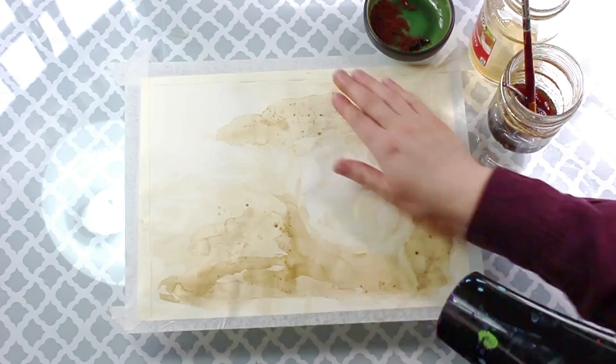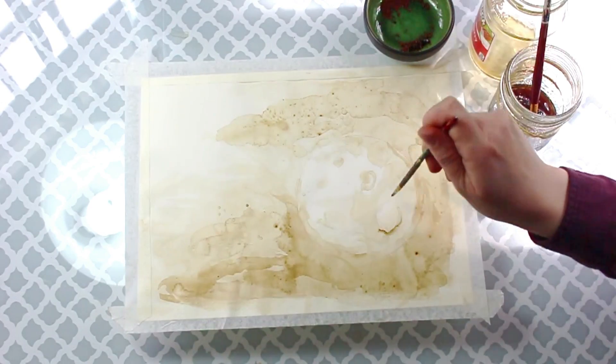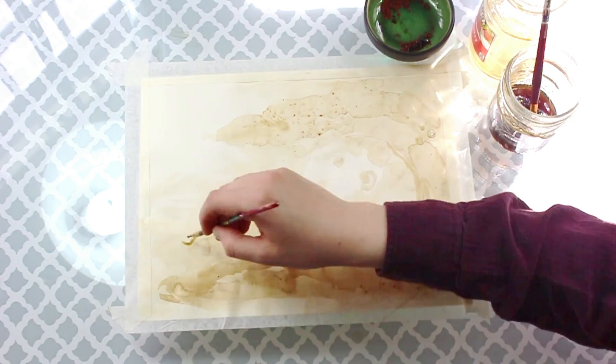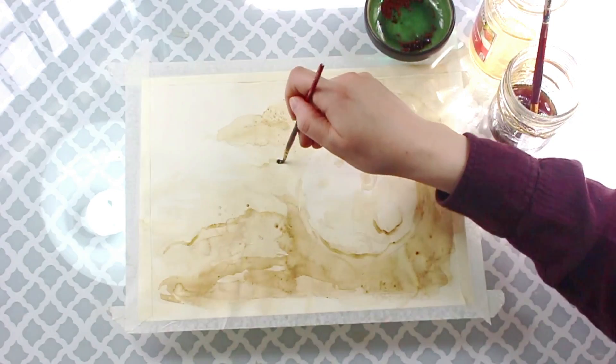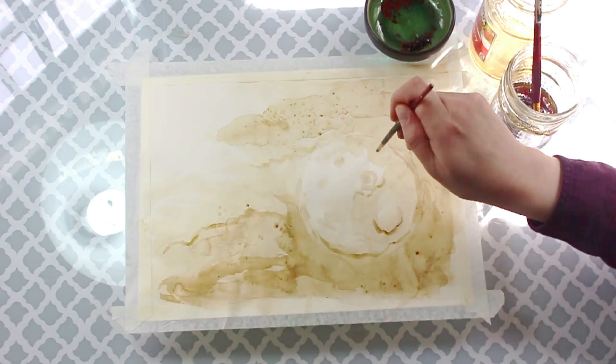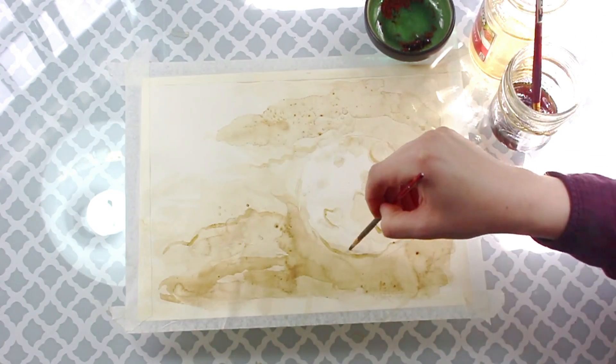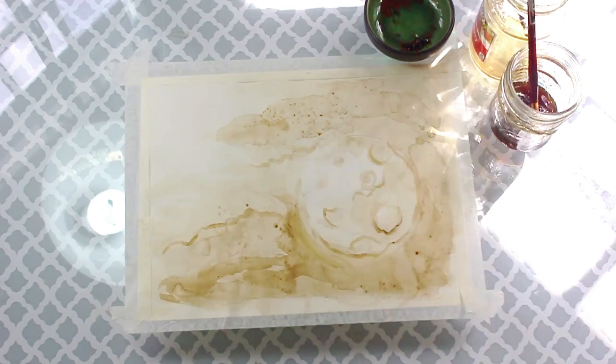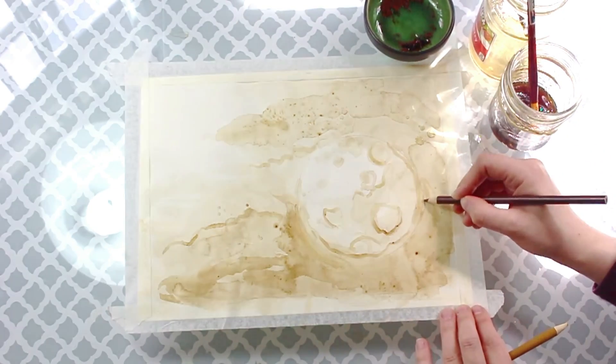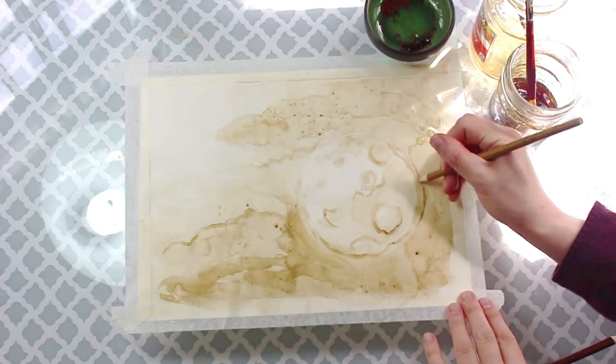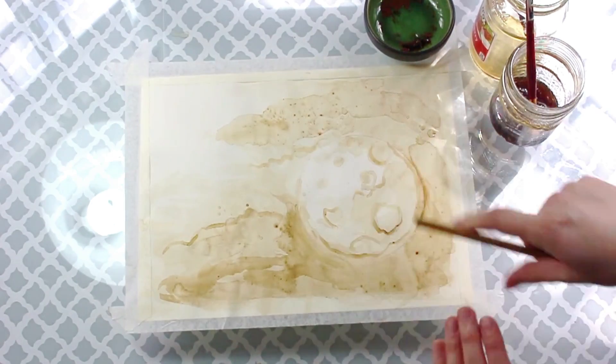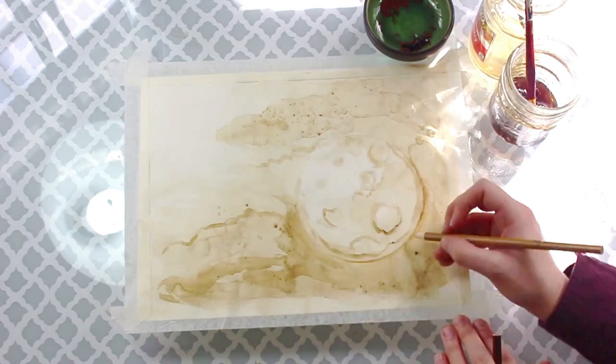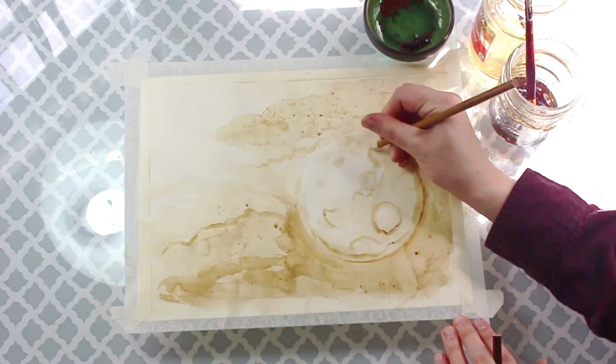After this next layer is dry I'm going to add another layer continuing to emphasize where it would be darker and where it'd be lighter. Now I'm starting to follow where the coffee has naturally created a line and just going back over that again to make it darker. Then I'm going to take out some brown colored pencils here and I'm going to use these to add in some more detail and to darken up that bottom right hand side a little bit more, thinking about where all the nooks and crannies on the face of the moon would be.